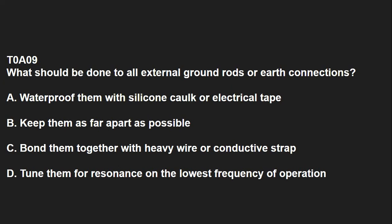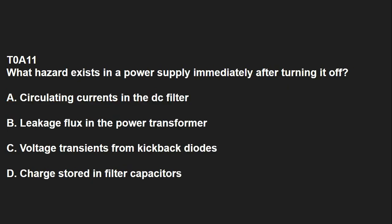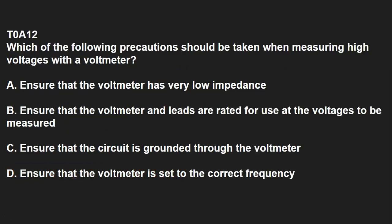T0A09: What should be done to all external ground rods or earth connections? You should bond them together with heavy wire or conductive strap. T0A10: What hazard is caused by charging or discharging a battery too quickly? Overheating or outgassing. T0A11: What hazard exists in a power supply immediately after turning it off? That's charge stored in the filter capacitors. T0A12: Which of the following precautions should be taken when measuring high voltages with a voltmeter? You should ensure that the voltmeter and leads are rated for use at the voltages to be measured.